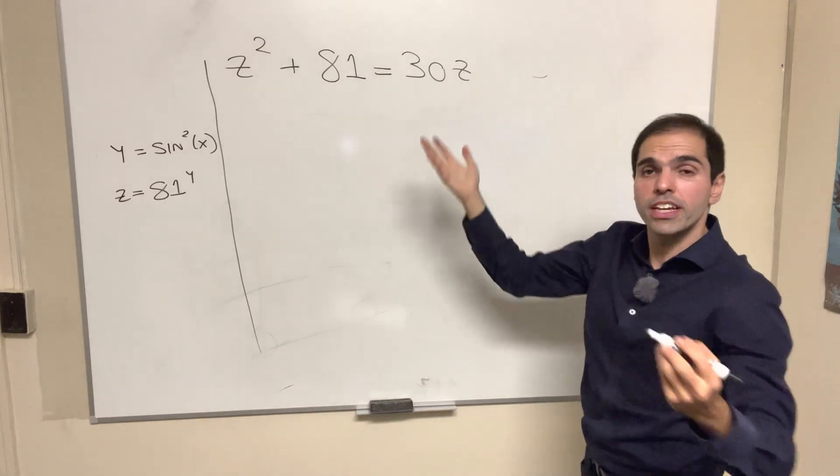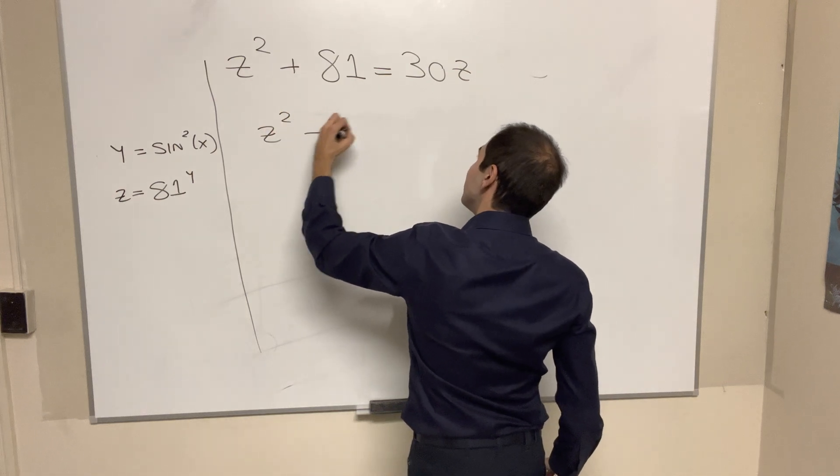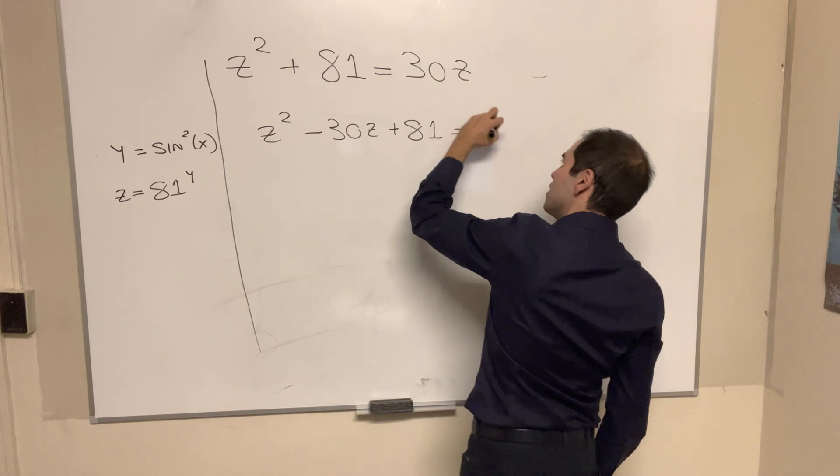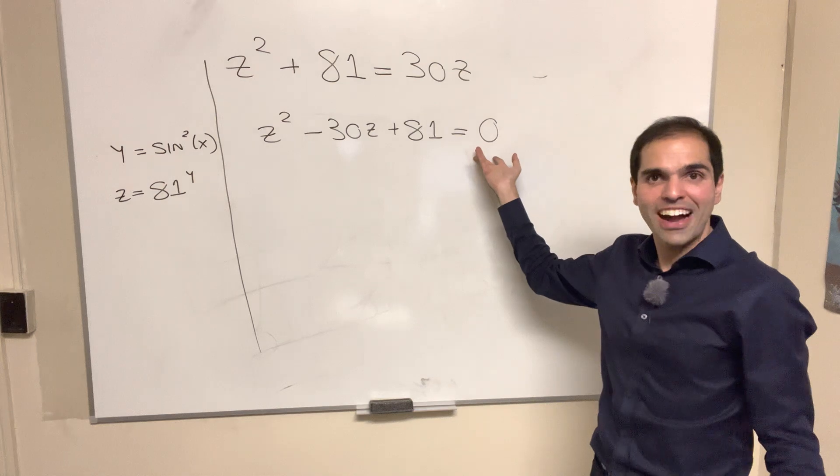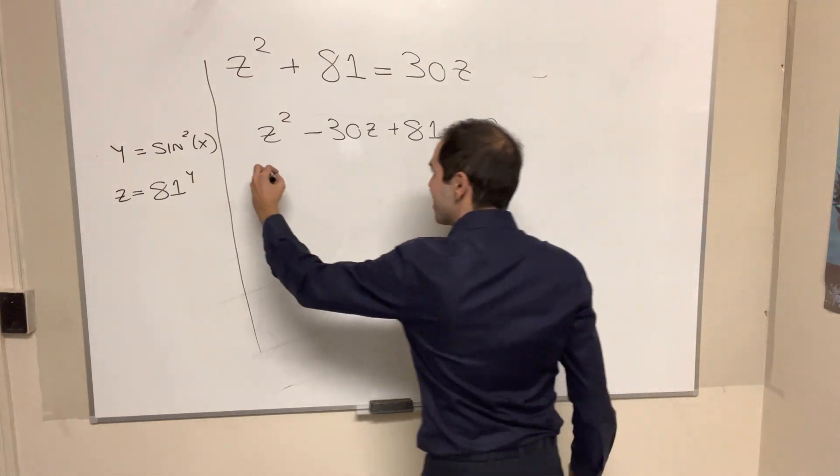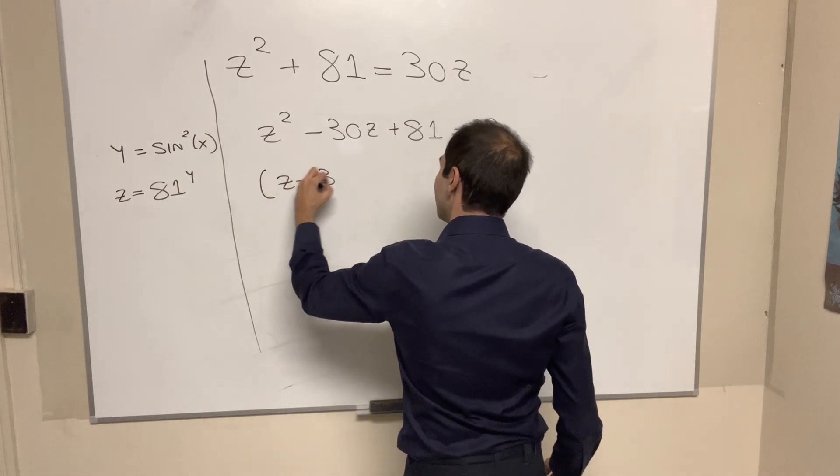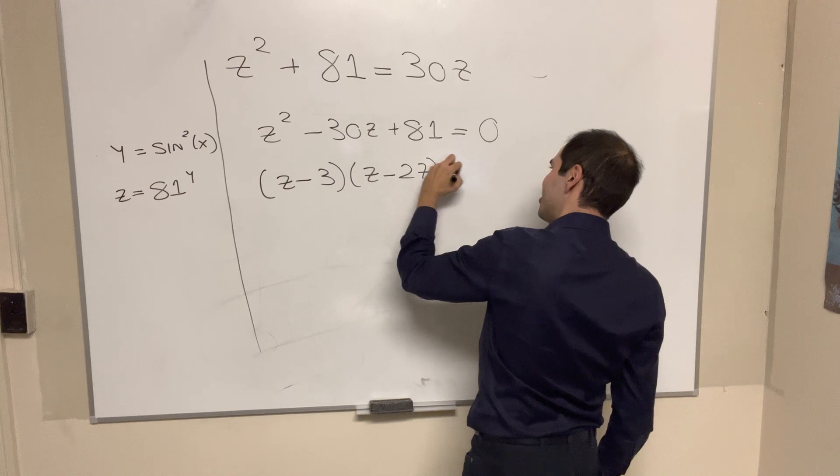And so we can rearrange this to become z squared minus 30z plus 81 equals 0. And the cool thing is, this turns out we can factor this quite nicely, because then this just becomes, I believe, z minus 3 times z minus 27 equals 0.